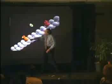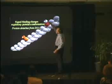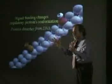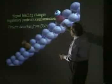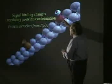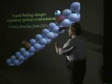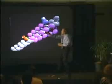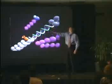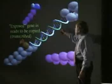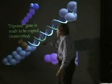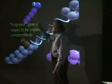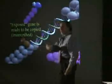It doesn't bind to the wrong-shaped gene; it binds to the right one. When a signal binds to a protein, it changes the protein's shape. As soon as the shape changes, the sleeve comes off the DNA and the gene is exposed. Then I make a copy of the gene called RNA, which goes into the cell where it's turned into the protein.